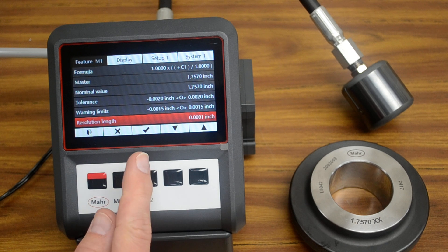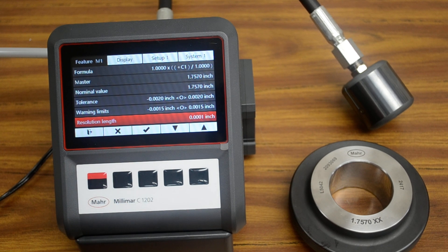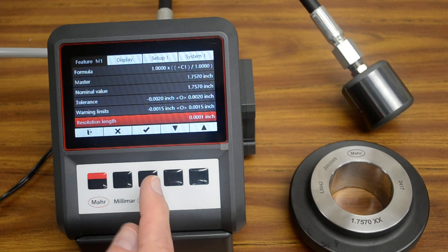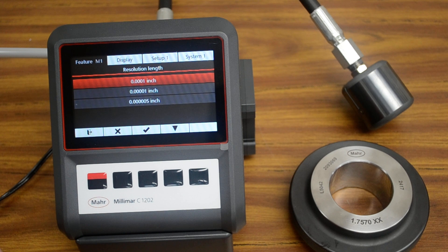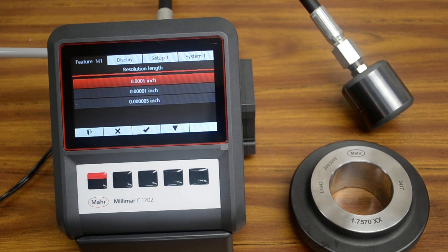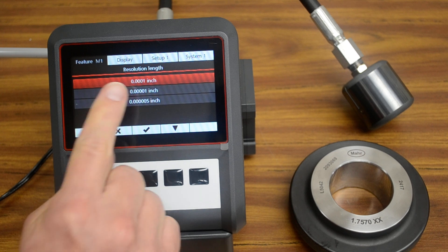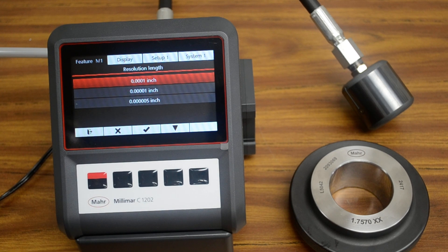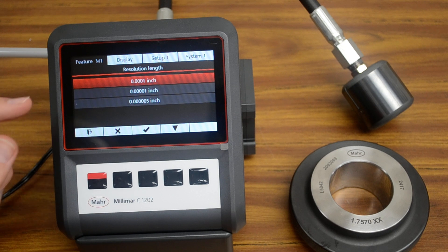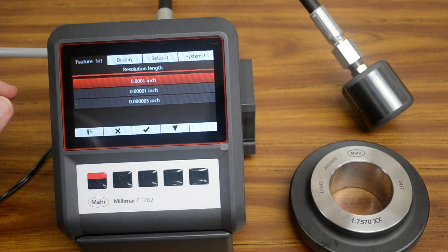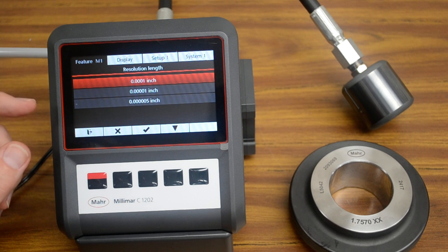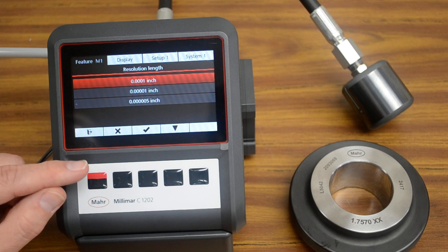The last thing you can set up is the resolution length, and that's the number of digits it will display on the screen. There are multiple options. We recommend setting one additional place than your tolerance. So for instance, our tolerance is plus or minus two. That's a three place decimal, and we're going to select four place resolution. I don't recommend choosing either one of these unless you are using a very tight tolerance, because the number on the screen will bounce around too much, and it will be visually disruptive.